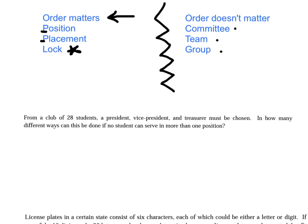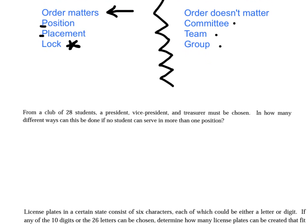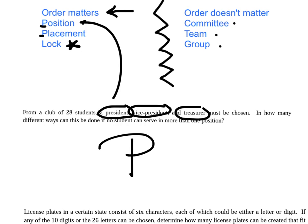All right, example number one. From a club of 28 students, a president, a vice president, and a treasurer must be chosen. In how many ways can this be done if no student can serve in more than one position? Now, again, I'm just looking for key words. Do they give me positions or placements, or are you picking a group, team, or committee? Well, to me, president is a position, vice president, and treasurer are all positions. So I'm going to use a permutation here.